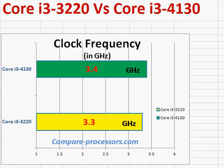In this video we are going to compare Intel's Core i3-3220 and the Core i3-4130 processors. The Core i3-4130 runs at 3.4 GHz versus the 3220 at 3.3 GHz — a difference of only about 100 MHz. So the Core i3-4130 is a little bit faster than the 3220.